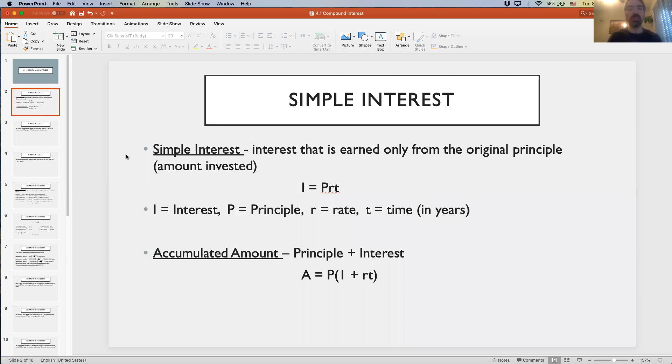Interest is earned - the bank is paying you money based on how much you have invested. This simple interest can be determined by the formula I equals PRT. I is the interest, how much the bank is giving you. P is the principal, how much money you put into the bank. R is the rate, and T is time.